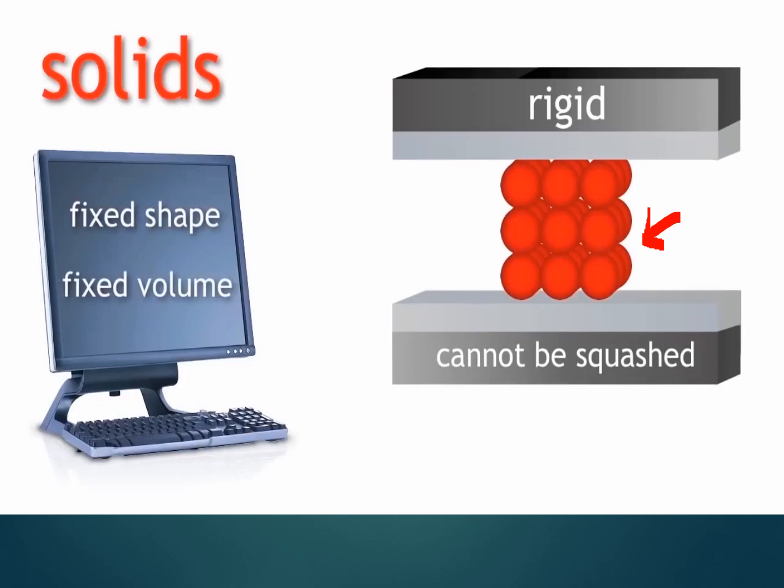That means its shape cannot be changed with simple ways. It has fixed volume — its volume cannot be changed like water or gas. That means you cannot control its volume. If you have a piece of rock, its volume is one cubic meter. Can you change the volume of the same piece of rock to become two cubic meters? Of course, no. That means it has fixed volume.